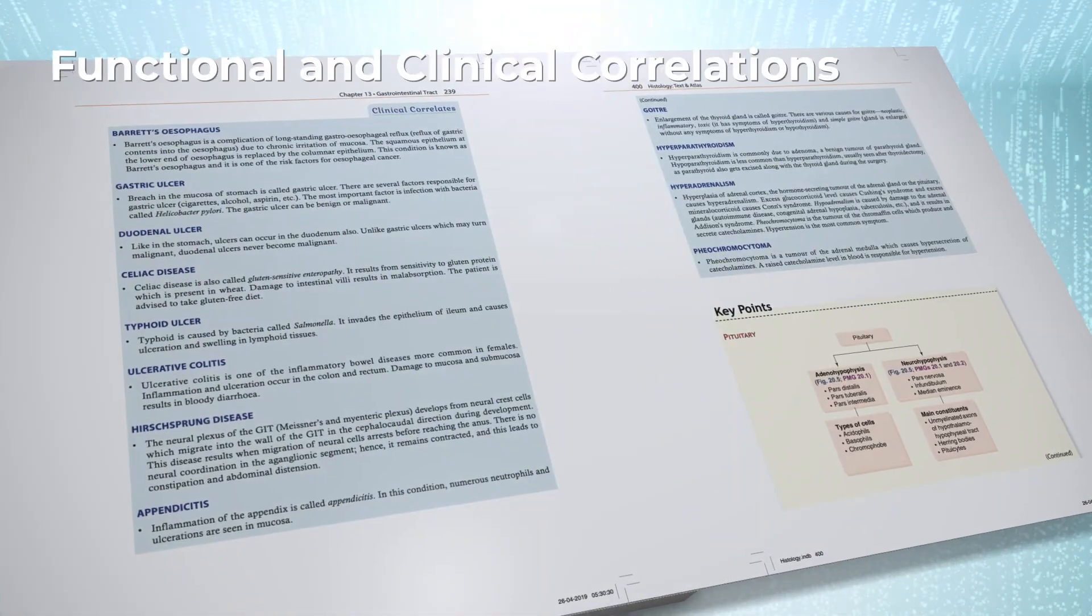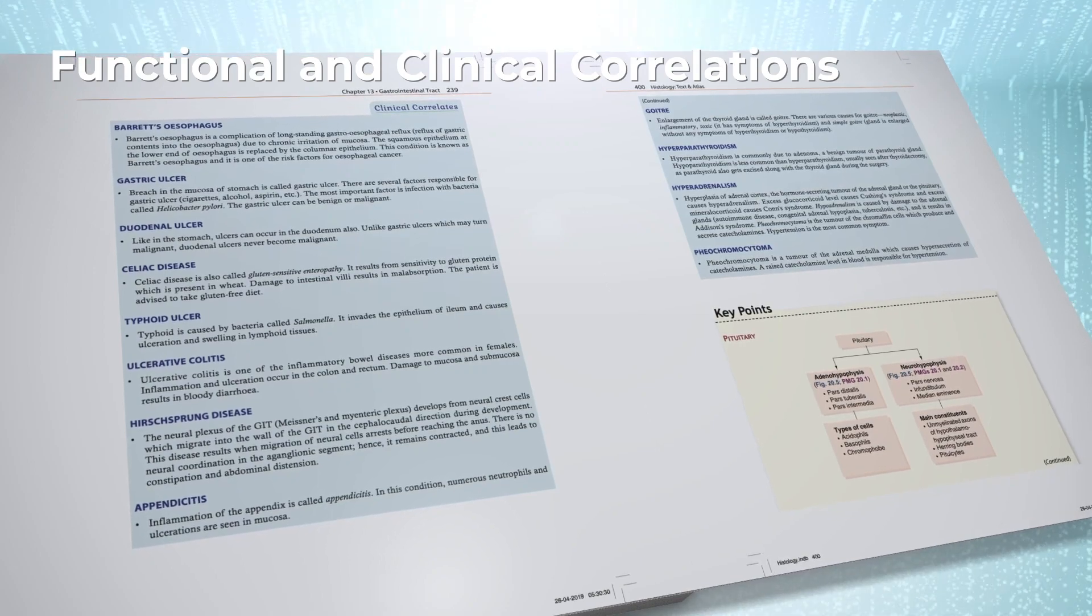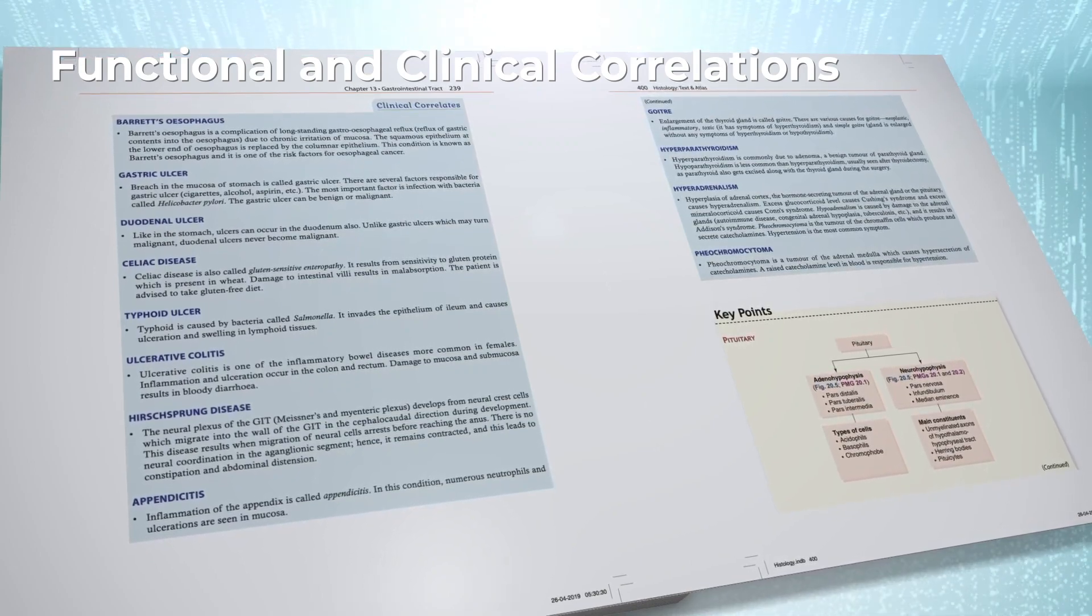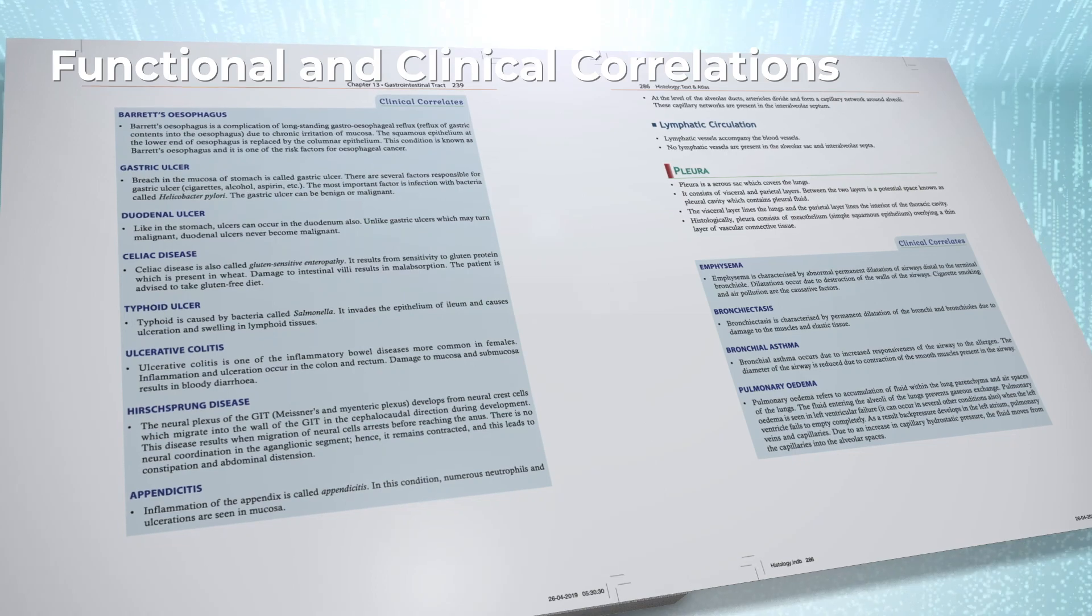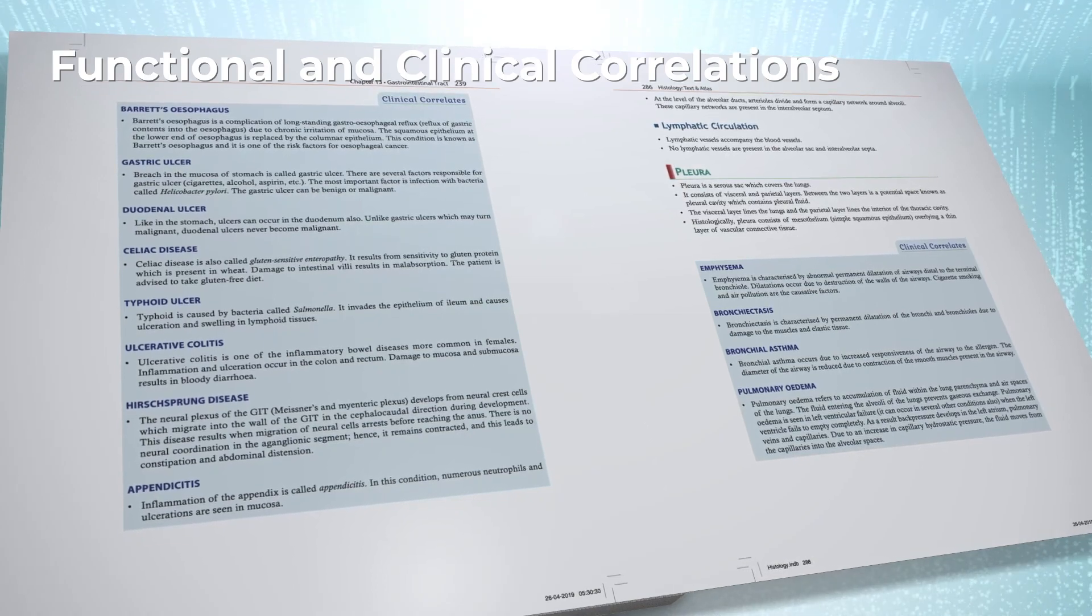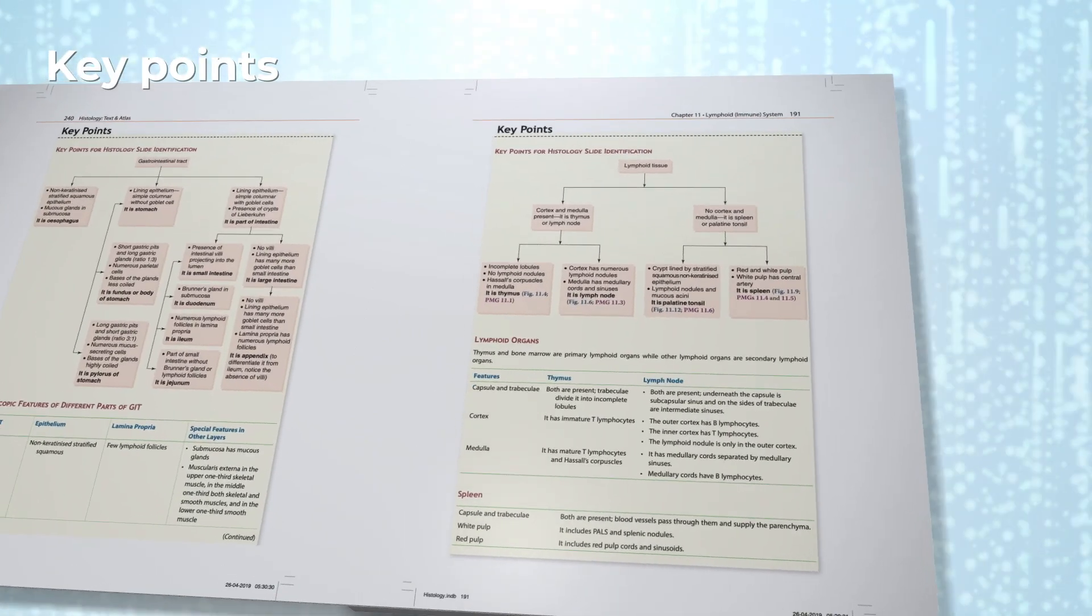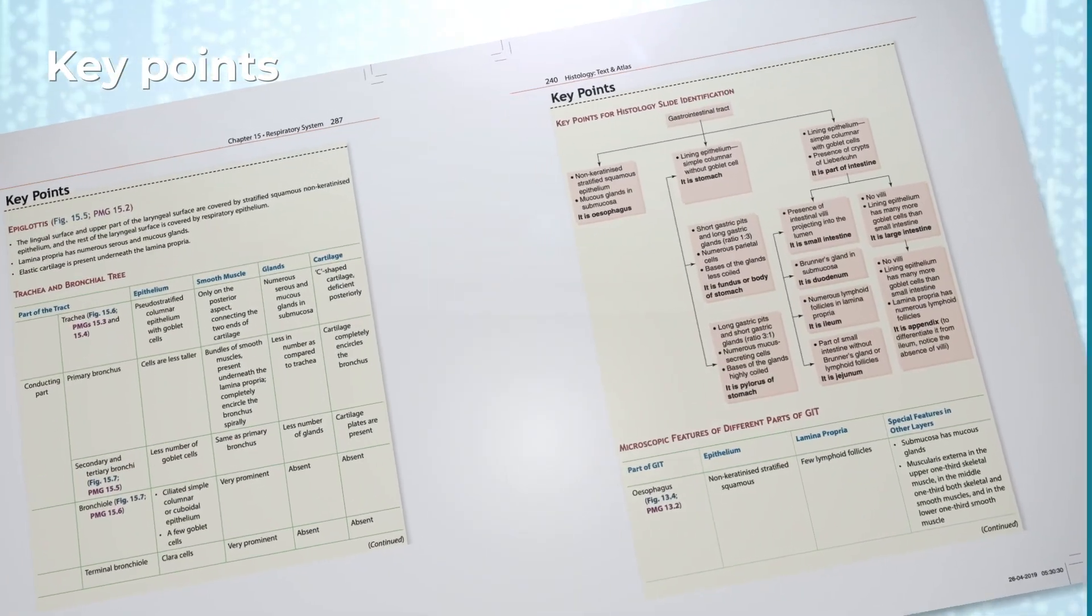Functional and clinical correlations throughout the book build on the importance of histology in physiology as well as diagnosis and pathogenesis of diseases. Key points at the end of each chapter assist quick revision of the topic.